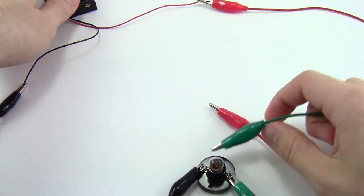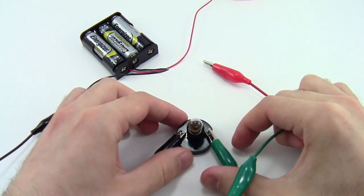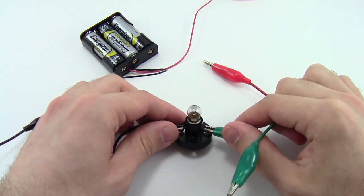So as of right now, we still have an open circuit. There is no complete path for the electricity to flow, so this light bulb does not light up.